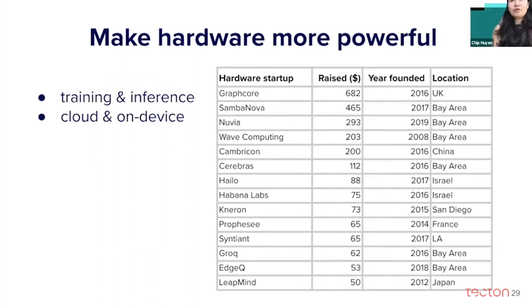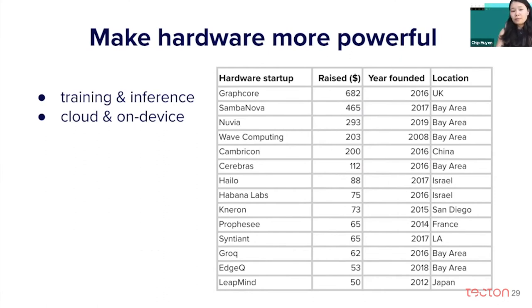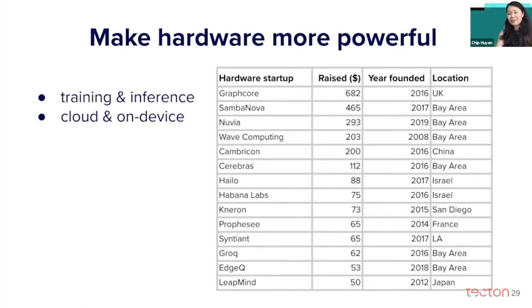Another approach to fast inference is to make hardware more powerful, so you can do inference on that hardware faster. There have been many different hardware startups focusing on both training and inference on cloud and on-device hardware. There are several startups that have raised money recently — they are spread all over the world and have raised a lot of money.